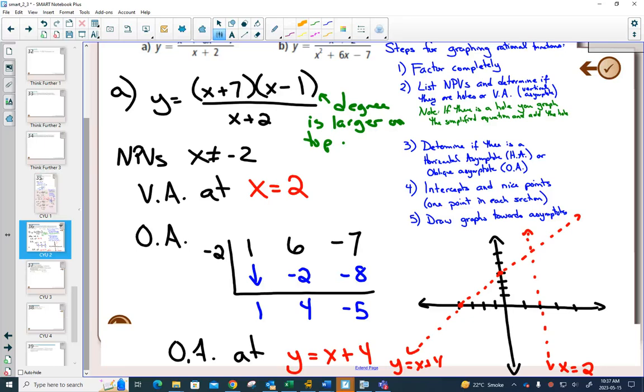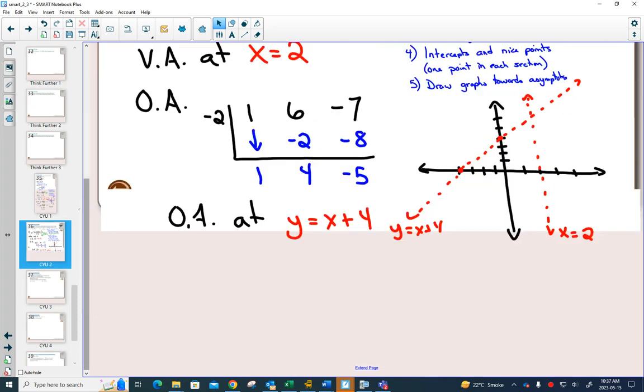Step 3 there, I mean step 4, now we need some points. And we need one point per section. Again, okay, and this is sometimes, as far as the sections go, sometimes confusing for students.